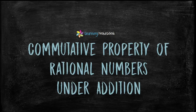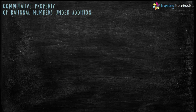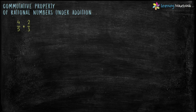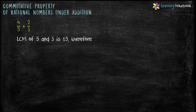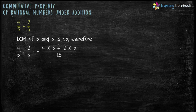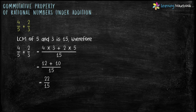First, let's see commutative property of rational numbers under addition. Let's understand this with the help of a few examples. Example number 1: add two rational numbers, 4 by 5 and 2 by 3. LCM of 5 and 3 is 15. Therefore, sum equals to 4 into 3 plus 2 into 5 by 15, which is equal to 12 plus 10 by 15. So the sum comes out to be 22 by 15.